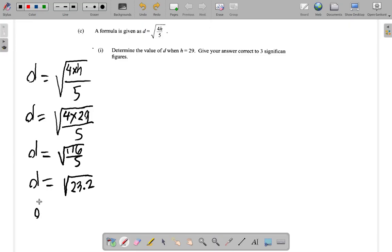Now you say D equals, what's the square root of 23.2? 4.8166. Good number of decimal places there and significant figures, but guess what?